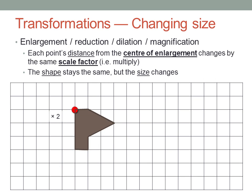Finally, transformations that change the size of the shape. This is variously called enlargement, reduction, dilation or magnification. Generally, enlargement is for making the shape bigger, with a scale factor greater than 1, and reduction is for making it smaller, with a scale factor less than 1. However, the terms are more or less interchangeable.